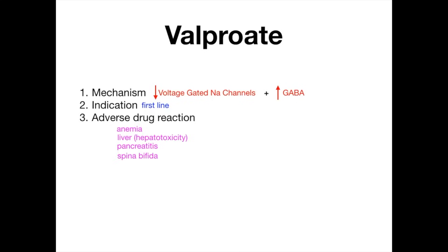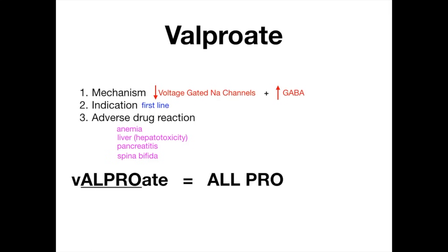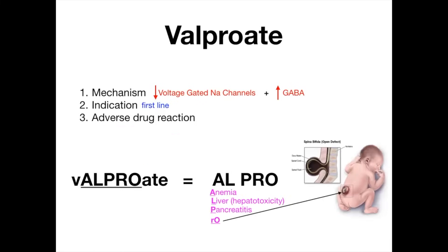Adverse drug reactions — the ones you should know are anemia, hepatotoxicity, pancreatitis, and spina bifida. How do you remember this? When you think of valproate, think of 'all-pro' — take the A-L-P-R-O out of valproate. All-pro stands for: anemia, liver (hepatotoxicity), pancreatitis, and then the little R, big O reminds you of the hole in the neural tube defect of spina bifida. The O is literally the hole or pouch through which spina bifida occurs. So all-pro from valproate: anemia, liver, pancreatitis, and the big O for spina bifida.